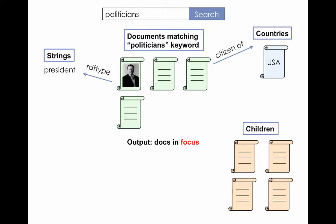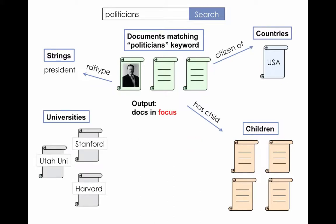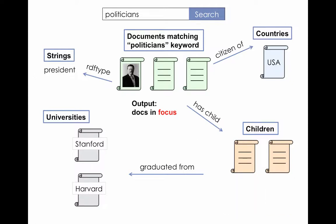Then, we took a set of documents about children and related them to the set of American presidents via the facet 'has child'. As a result, all presidents without children disappeared. Finally, we took a set of documents about universities and related them to the set of children of American presidents via the facet 'graduated from'. We set the universities to Stanford or Harvard, and children who didn't go to any of these universities disappeared. Moreover, presidents who were parents of the disappeared children were also discarded.